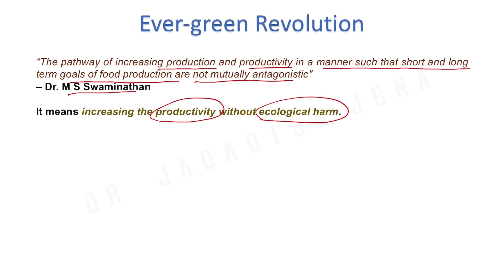Without hampering the resource base for future generations — how can we achieve food security? If we explore more and more of the resource base today, that will of course have an antagonistic effect on future food security. According to Dr. MS Swaminathan, we have to use resources in such a way and maintain the ecological balance so that our short-term and long-term goals are not antagonistic.